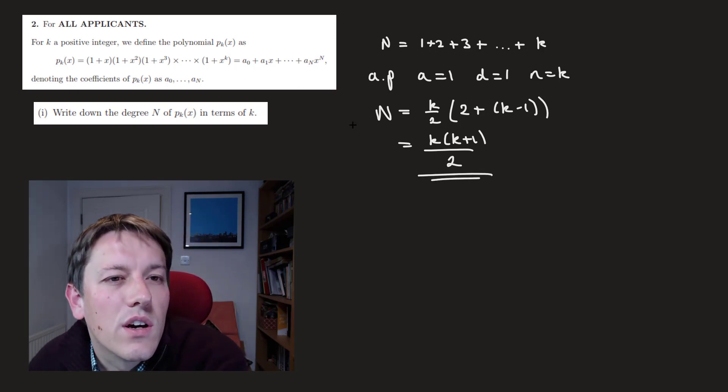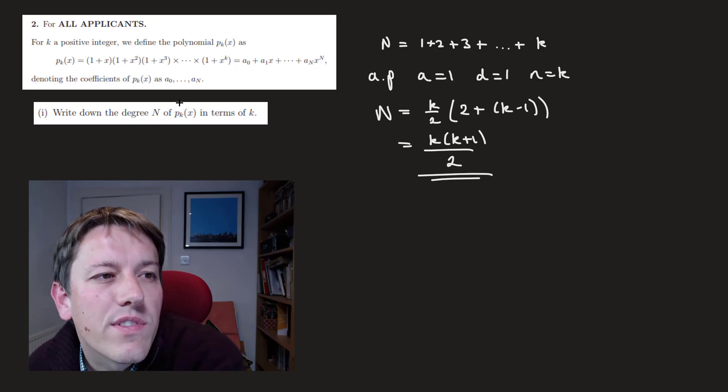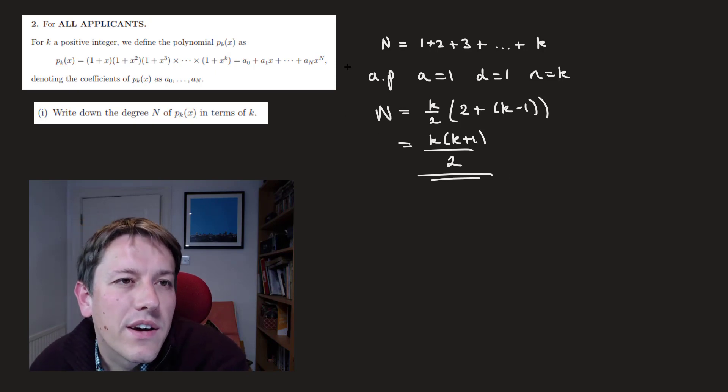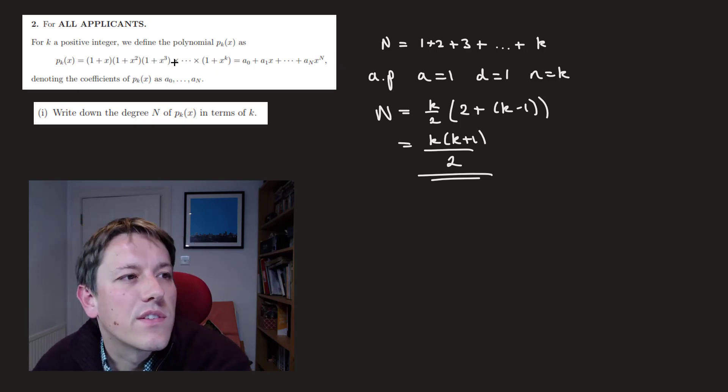So that's the value of N — it's the order of the polynomial, the highest power of x once we multiply all this out.